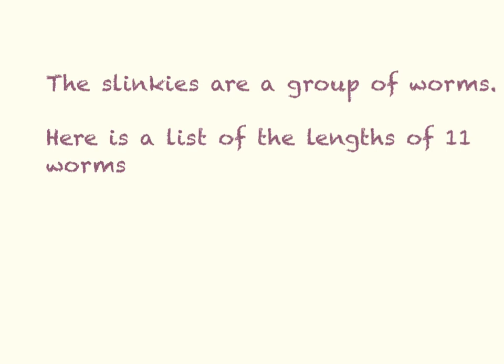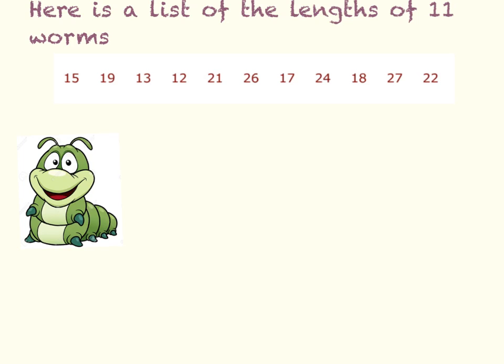Today we're going to look at two new keywords. The first one is the median, and that's what we're asked to find in this question. The Slinkies are a group of worms. Here is a list of the lengths of 11 worms. So here's a list of the 11 worms, and we're asked to find the median.